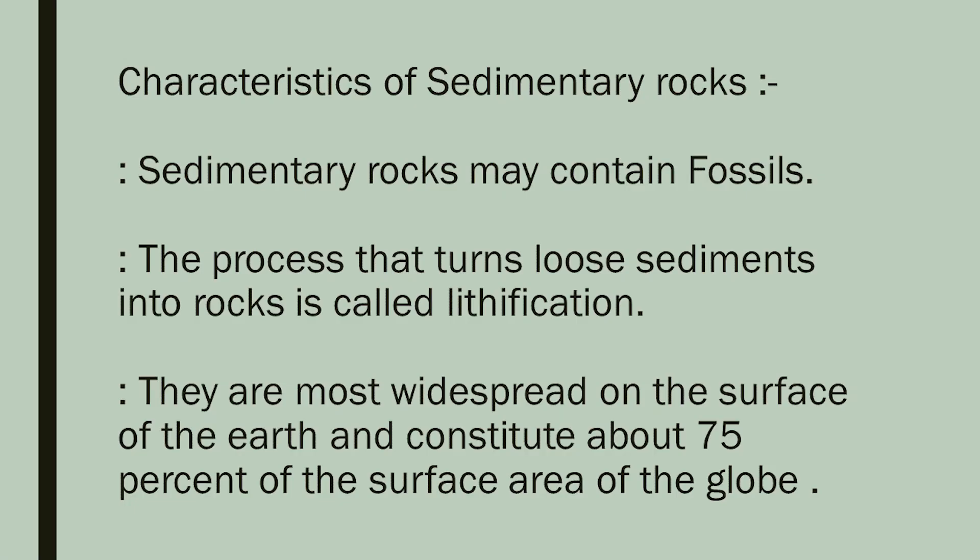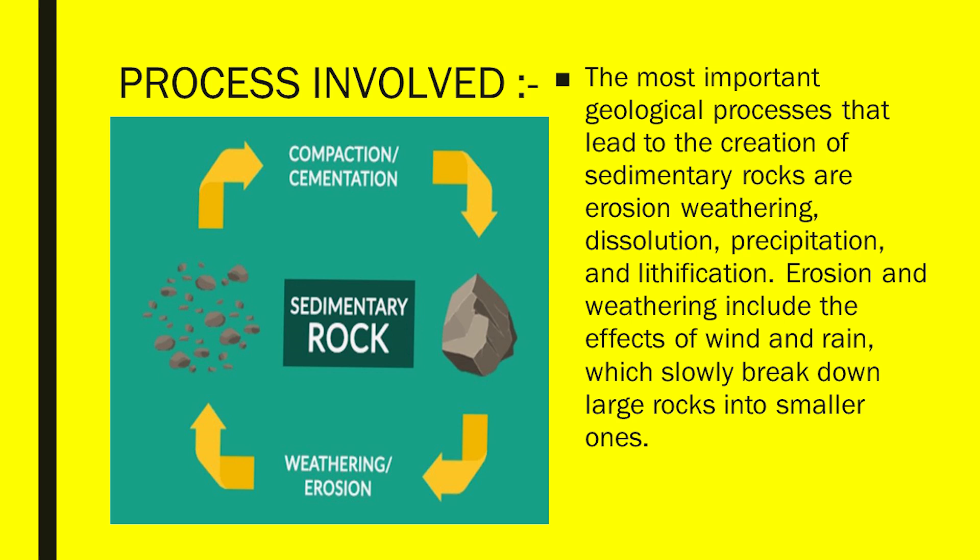Characteristics of sedimentary rocks: sedimentary rocks may contain fossils. The process that turns loose sediments into rocks is called lithification. They are most widely spread on the surface of the earth and constitute about 75% of the surface area of the globe. The most important geological processes that lead to the creation of sedimentary rocks are erosion, weathering, dissolution, precipitation, and lithification. Erosion and weathering include the effects of wind and rain, which slowly break down larger rocks into smaller ones.